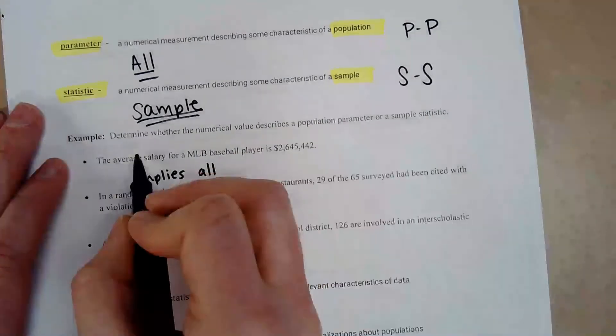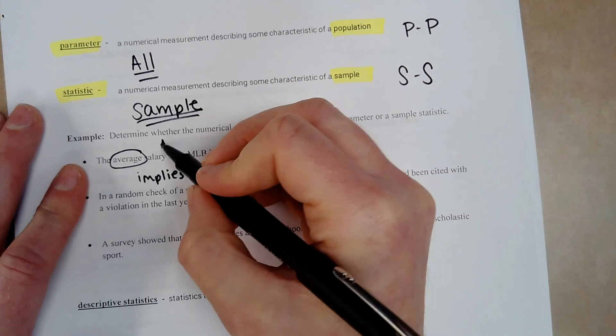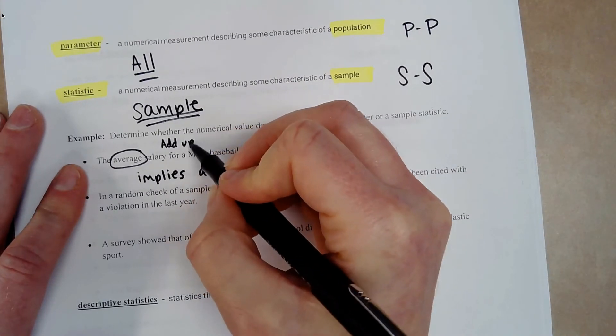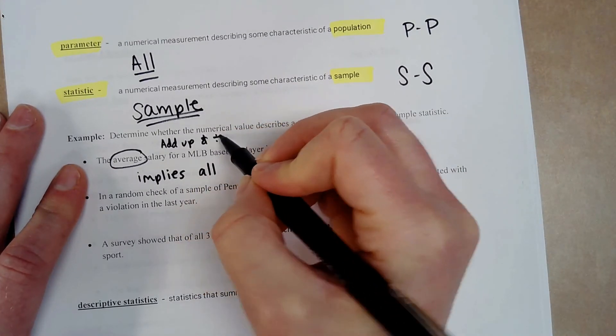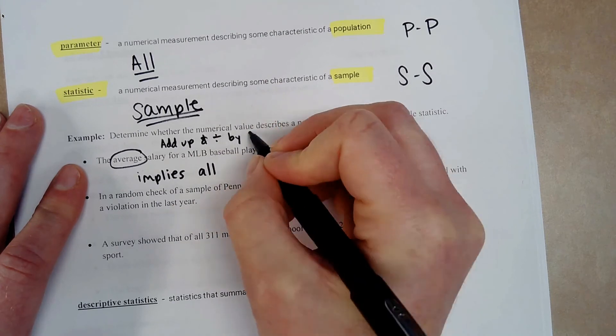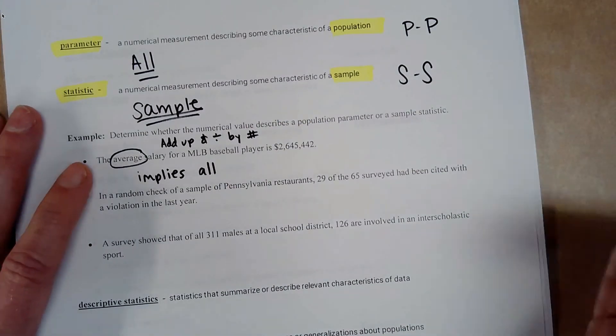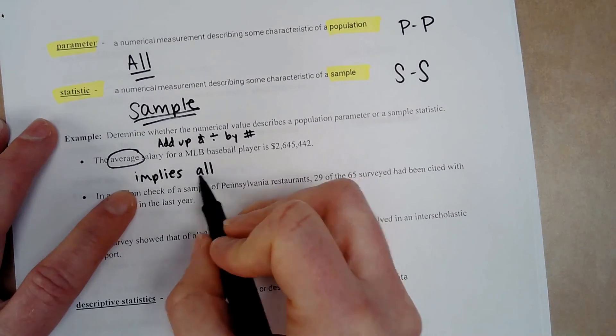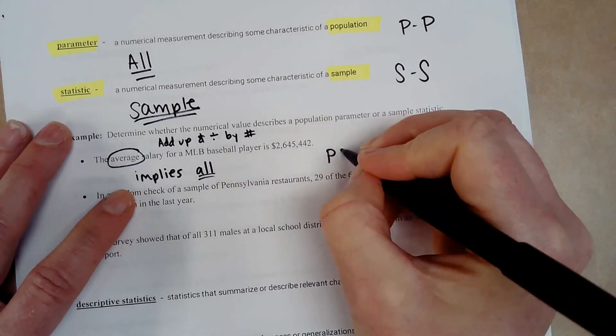It just tells us the average salary. So that implies that we're dealing with all. Because how do you find average? You're going to add up and divide by how many you have. So if it's all, then we are talking about a parameter.